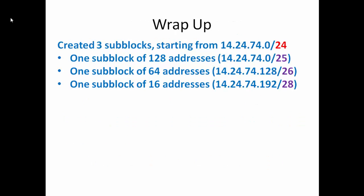To wrap up, we have 3 subblocks that we created starting from 14.24.74.0. We created a first subblock of 128 addresses with a starting address of 14.24.74.0/25. We created one block of 64 addresses with a starting address of 14.24.74.128/26. And we created one subblock of 16 addresses with a starting address of 14.24.74.192/28. Hopefully that explained how we can create subblocks of different sizes and get that forward slash notation figured out for them.